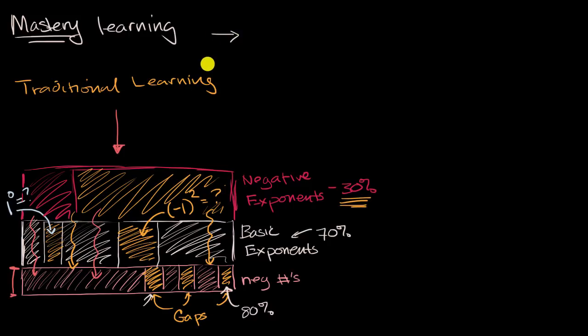And so mastery learning says, look, instead of making everyone go at the same pace, let us personalize. And personalization in this context means, let people go at their own pace. So traditional learning, it's fixed pace, and variable understanding.